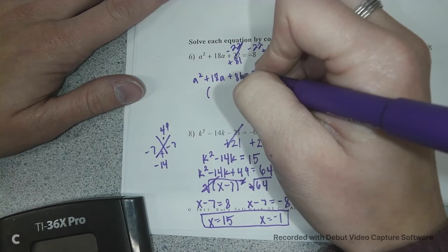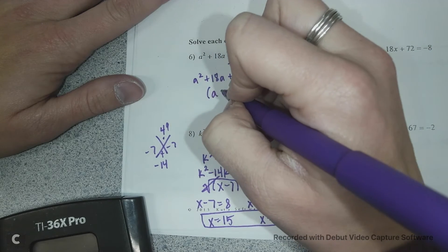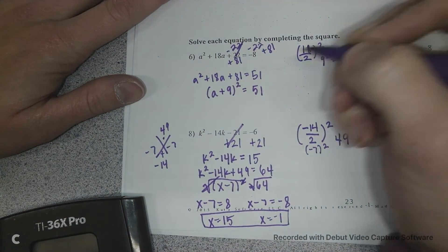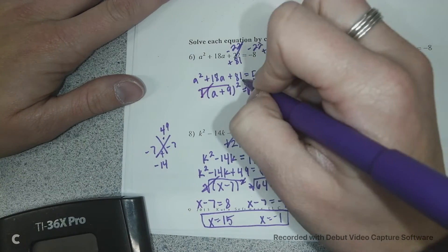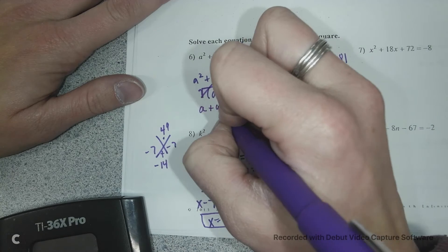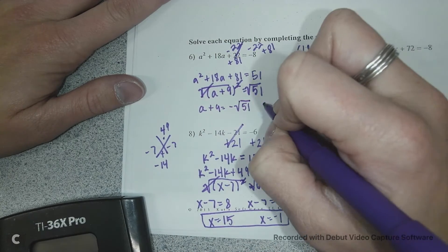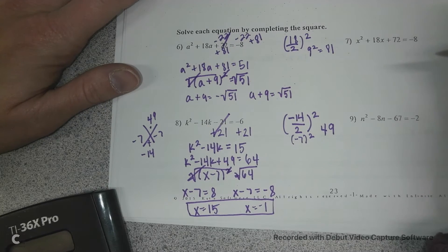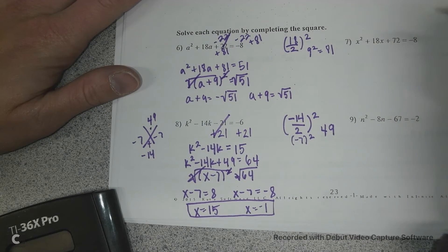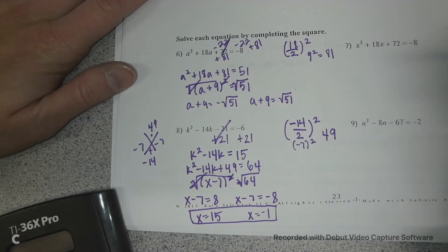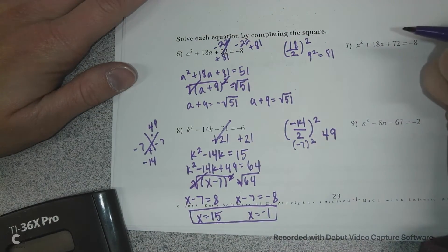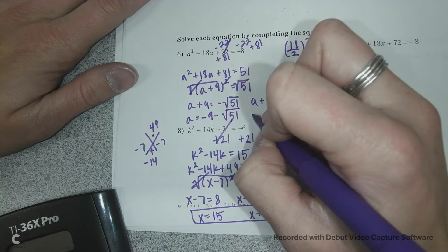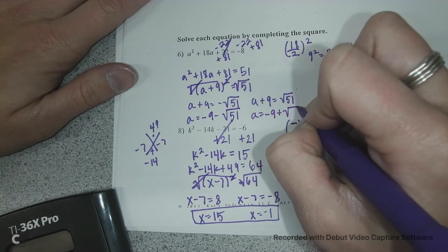So we have a squared plus 18a plus 81 equals negative 22 minus 8 plus 81, 51. So right there you can tell it's not going to be pretty because that's not a perfect square. I need two numbers that multiply to get 81 and add to get 18. So I've got positive 9 squared. Then we're just going to square root each side. So I have a plus 9 equals negative the square root of 51. And a plus 9 equals positive the square root of 51. Because remember, you could have two answers. Then we would subtract 9 from each side. And we want that 9 to go first. So it's going to be negative 9 minus the square root of 51, and negative 9 plus the square root of 51.